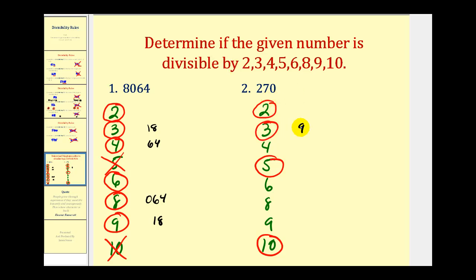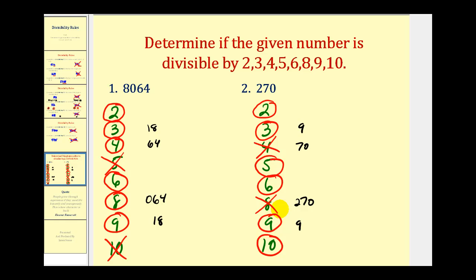Since we already have the sum of the digits, let's test for 9: since 9 is divisible by 9, so is the given number. To test for 4, we look at the last 2 digits — 70 — and 70 is not divisible by 4, so the given number is not divisible by 4. To be divisible by 6, it has to be divisible by both 2 and 3, which it is. Lastly, to test for 8, we look at the last 3 digits, which is the entire number 270 — and 270 is not divisible by 8. Okay, that's going to do it for this video. I hope you found it helpful.